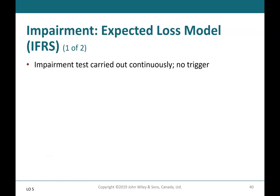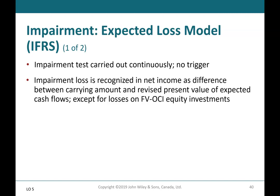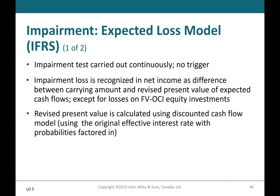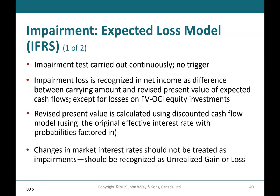Impairment Expected Loss Model: impairment tests are carried out continuously with no trigger required. The impairment loss is recognized in net income as the difference between the carrying amount and the revised present value of expected cash flows, except for losses on fair value through OCI equity investments. The revised present value is calculated using a discounted cash flow model with the original effective interest rate, with probabilities factored in. Changes in market interest rates should not be treated as impairments — they should be recognized as unrealized gains or losses.